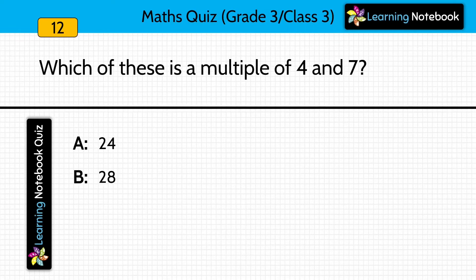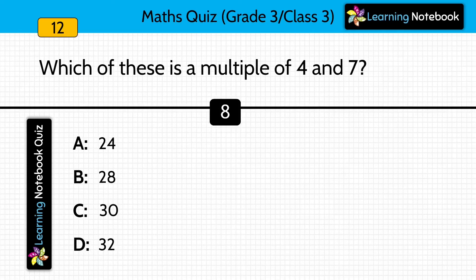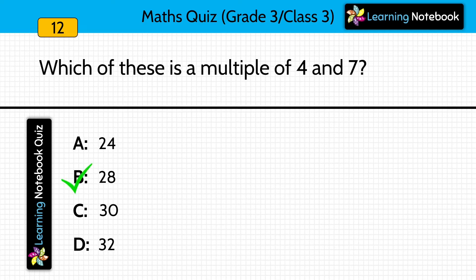Which of these is a multiple of 4 and 7? Answer is option B, 28. Because 4 into 7 equals to 28.